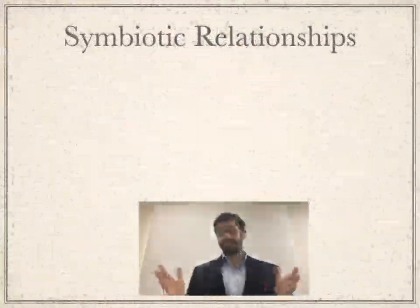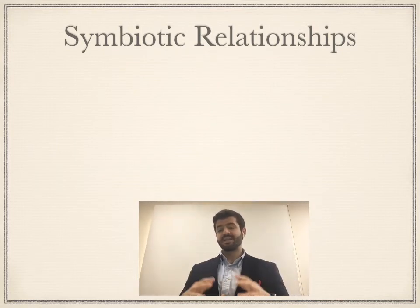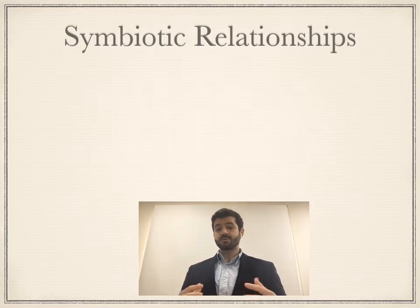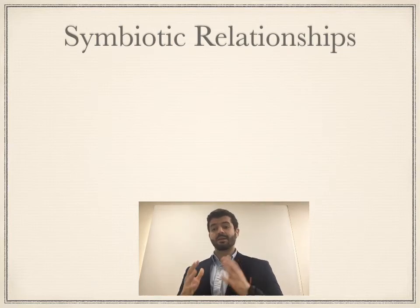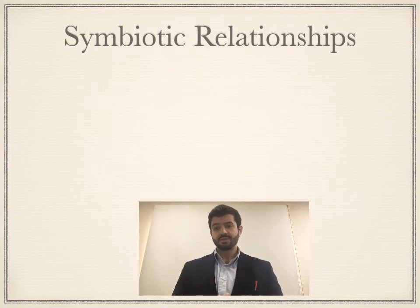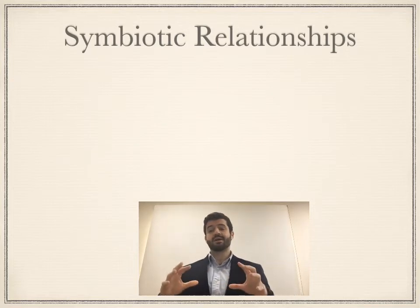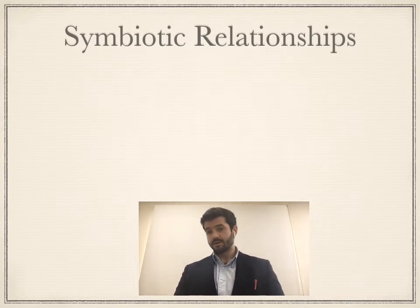Within an ecosystem, ecologists and scientists examine the close relationships that two species have. Any long-term relationship or interaction between two species is studied to understand the nature of that relationship. Symbiosis is the term used to define a long-term relationship between two species. This relationship can be broken down into three different types: both organisms benefit from each other, one harms the other, or there is no effect on one of them.